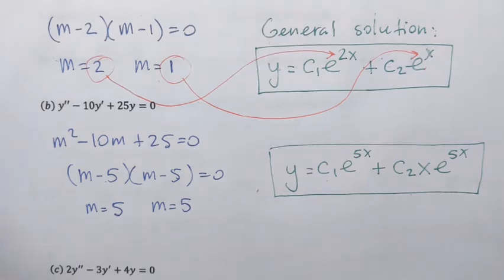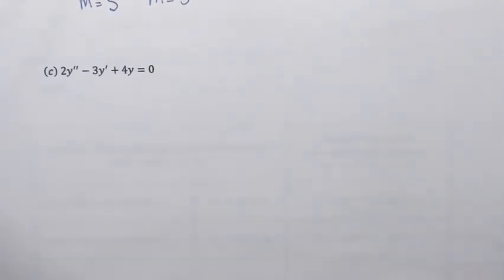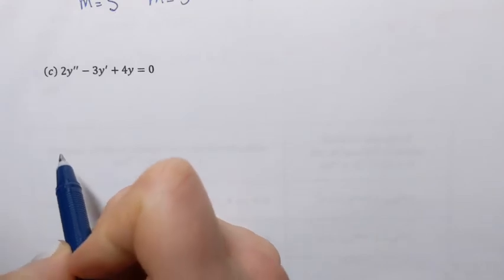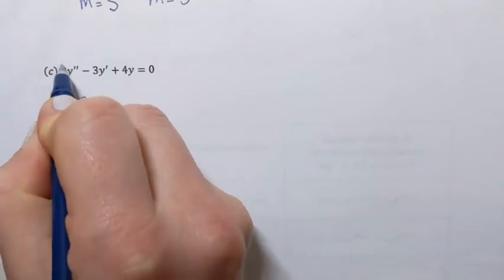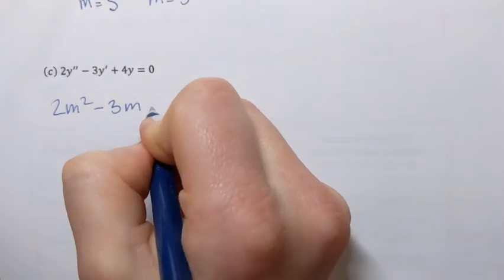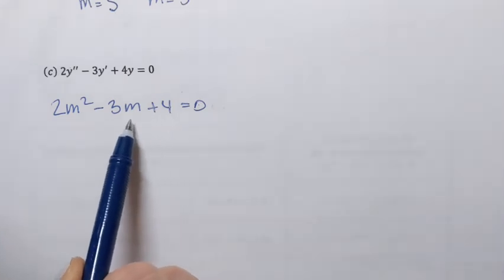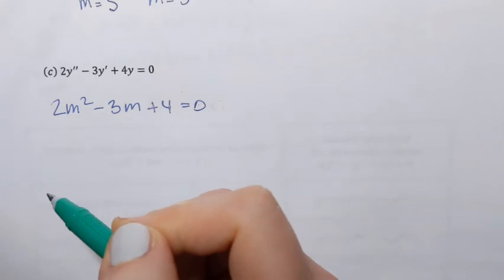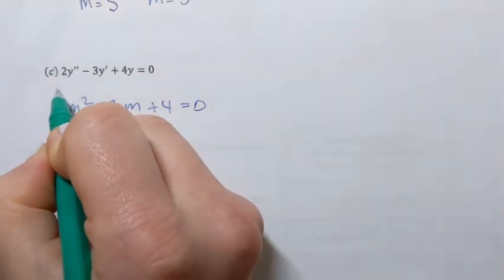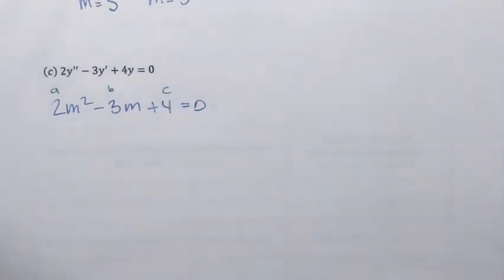Now let's look at the third example — our last differential equation. We're going to obtain an auxiliary equation, also called the characteristic equation. In this case it's going to be 2m squared minus 3m plus 4 equals 0. As I look at this equation, I can see I won't be able to factor it easily, so let's apply the quadratic formula instead.